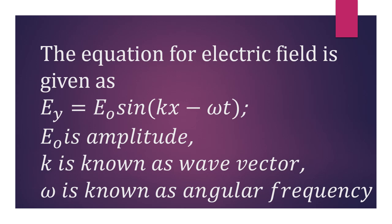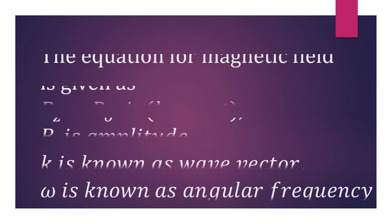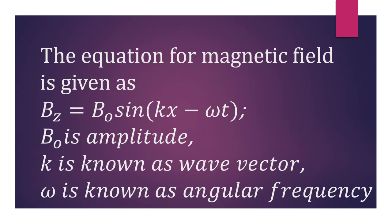Where E₀ is amplitude, k is known as wave vector, and ω is angular frequency. Similarly, the equation for magnetic field will be B_z = B₀ sin(kx − ωt). Remember, the magnetic field is along the z-axis so we have written B_z, where B₀ is amplitude, k is wave vector, and ω is angular frequency.